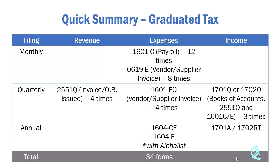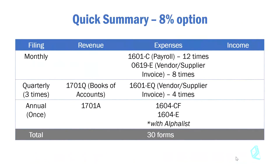If you still remember the graduated income tax rate for individuals — also applicable to corporations — but if you chose the eight percent option, which is only applicable for individuals who are not VAT-registered, the number of filings is reduced. There is only one tax rate covering both percentage tax and income tax, which is the eight percent. Under income, there will be no separate forms because the basis for the eight percent is your gross sales and revenues.